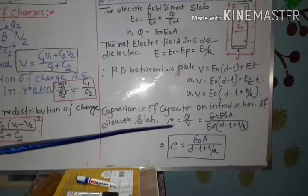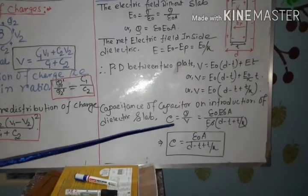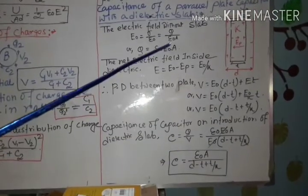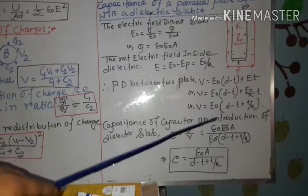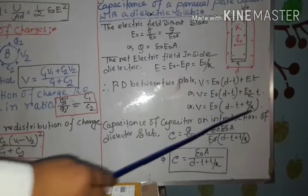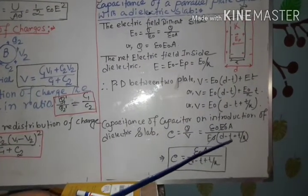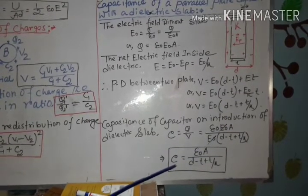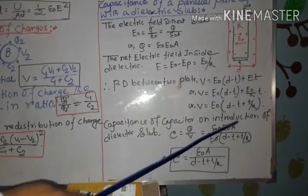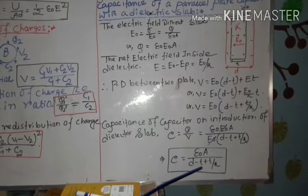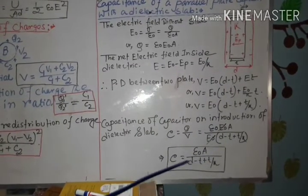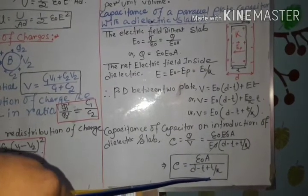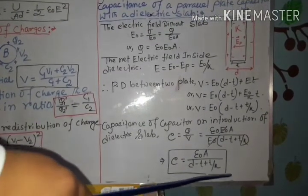Therefore, the new capacitance is given by C equals Q by V. Q equals epsilon naught E naught A, and V equals E naught into D minus T plus T by K. After E naught cancels, we get C equals epsilon naught A divided by D minus T plus T by K. This is the expression for the capacitance of a parallel plate capacitor with a dielectric slab.